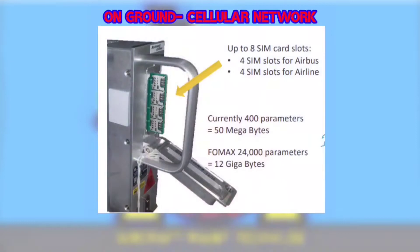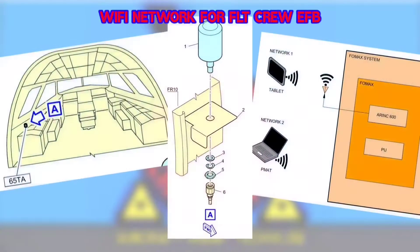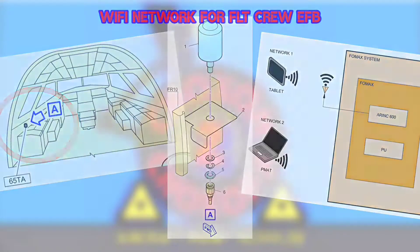On the face of the FORMAX computer there are eight SIM card slots — four for Airbus SIM cards and four for airline SIM cards. For flight crew Electronic Flight Bag access to the data, there is one Wi-Fi antenna located inside the cockpit on the left side behind the captain's seat.